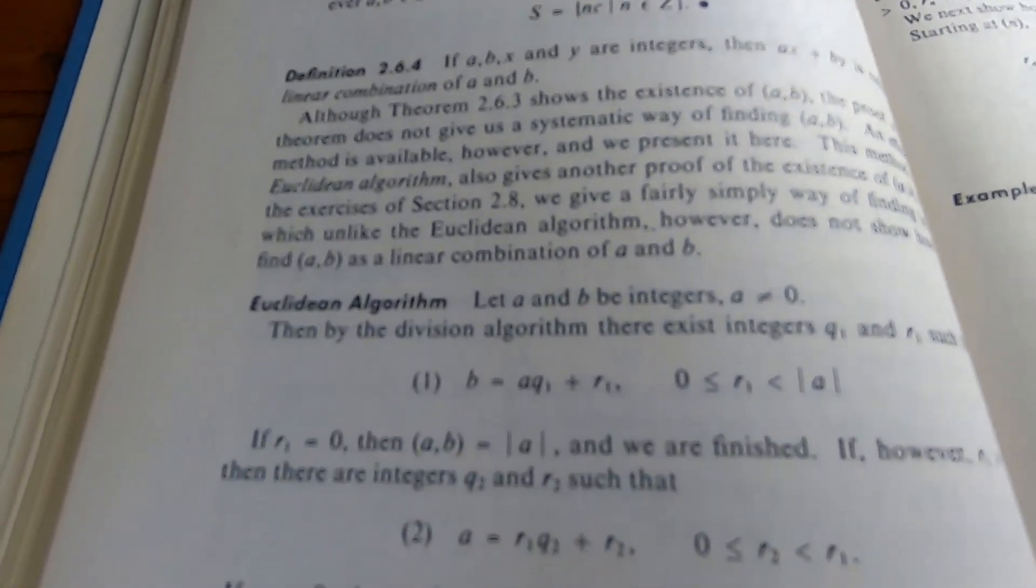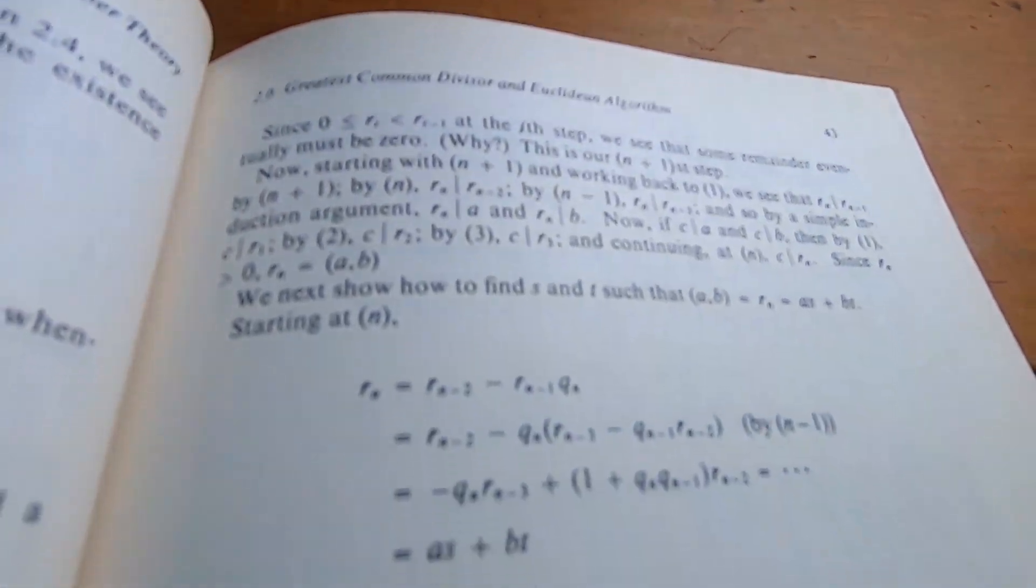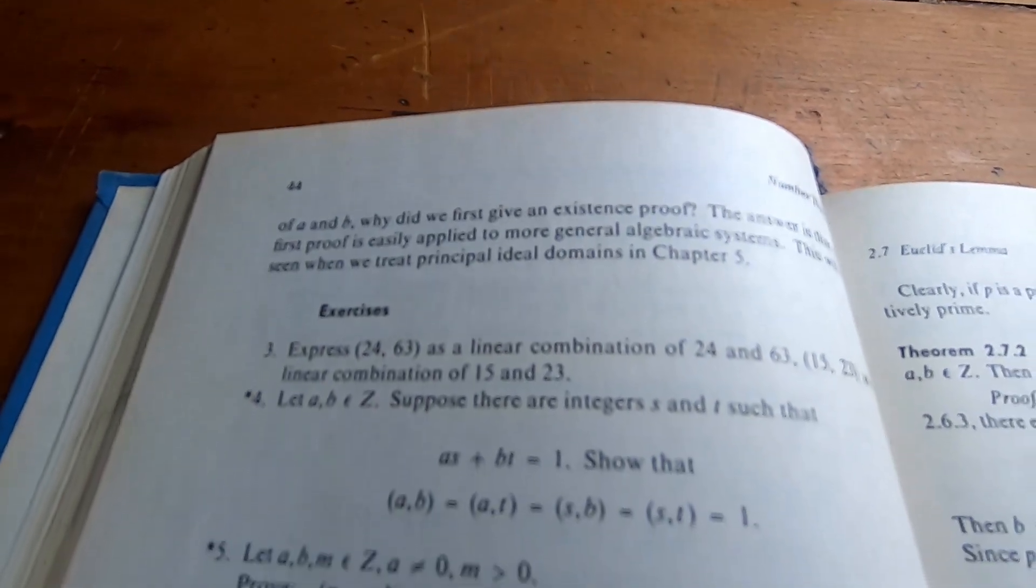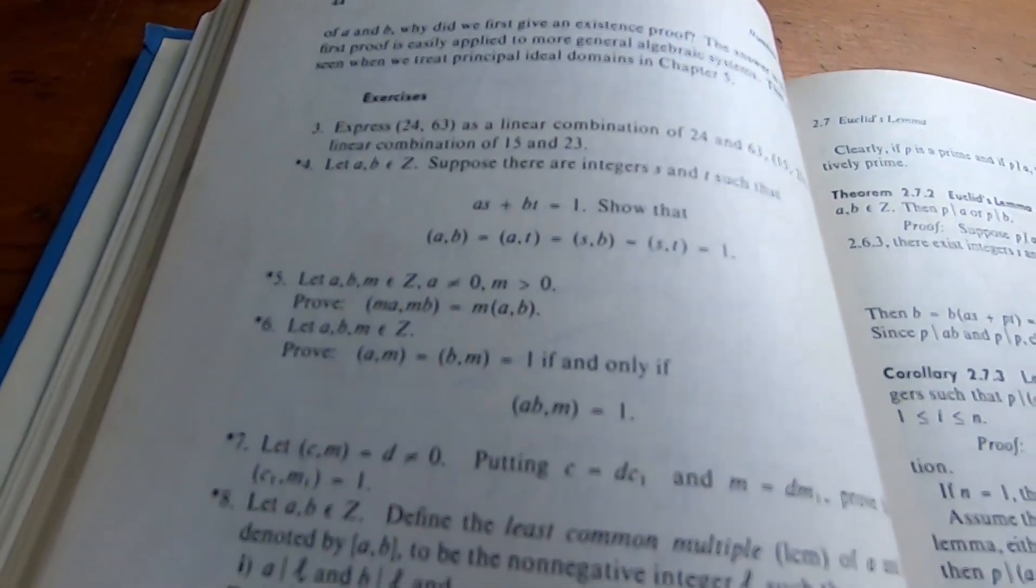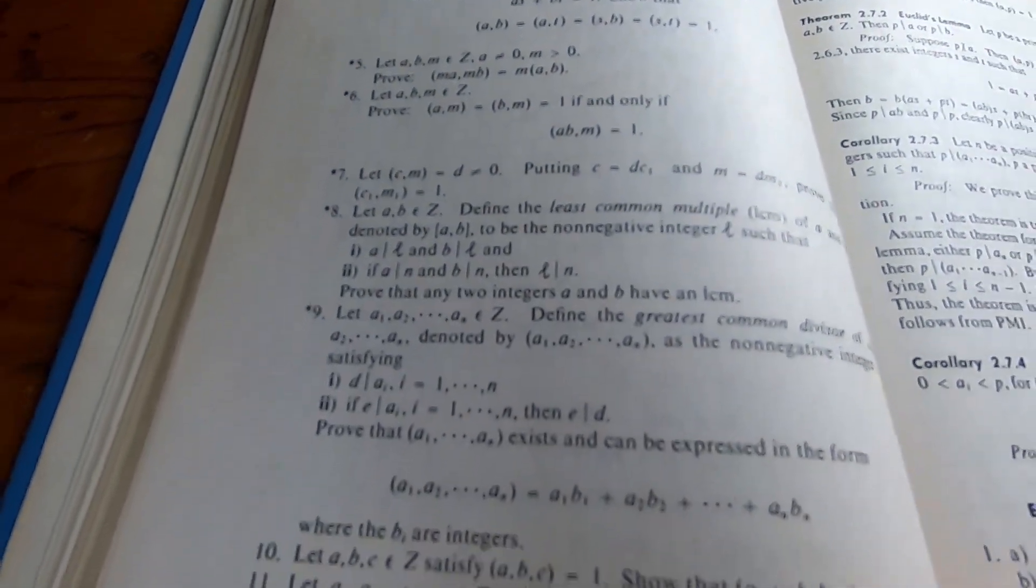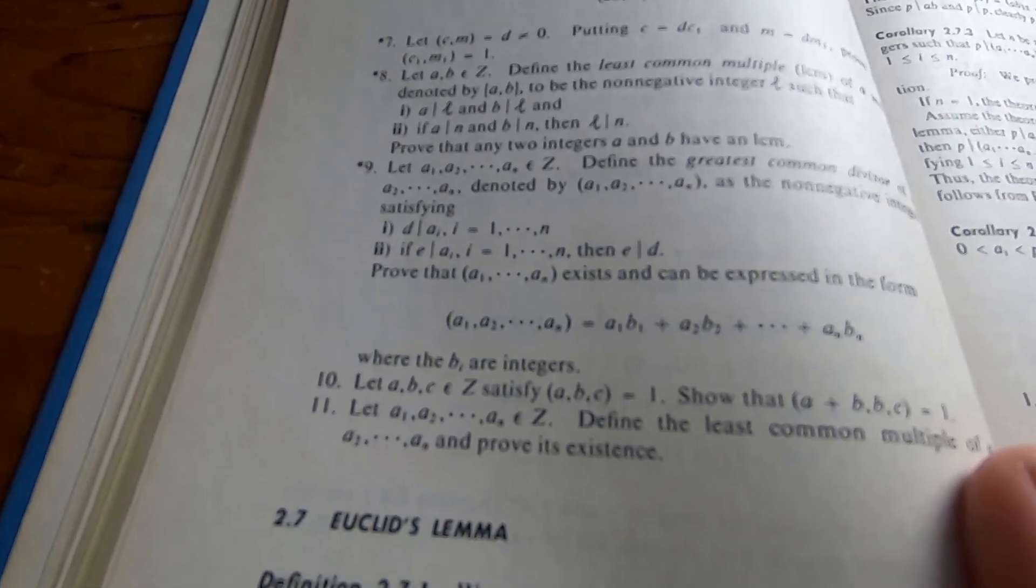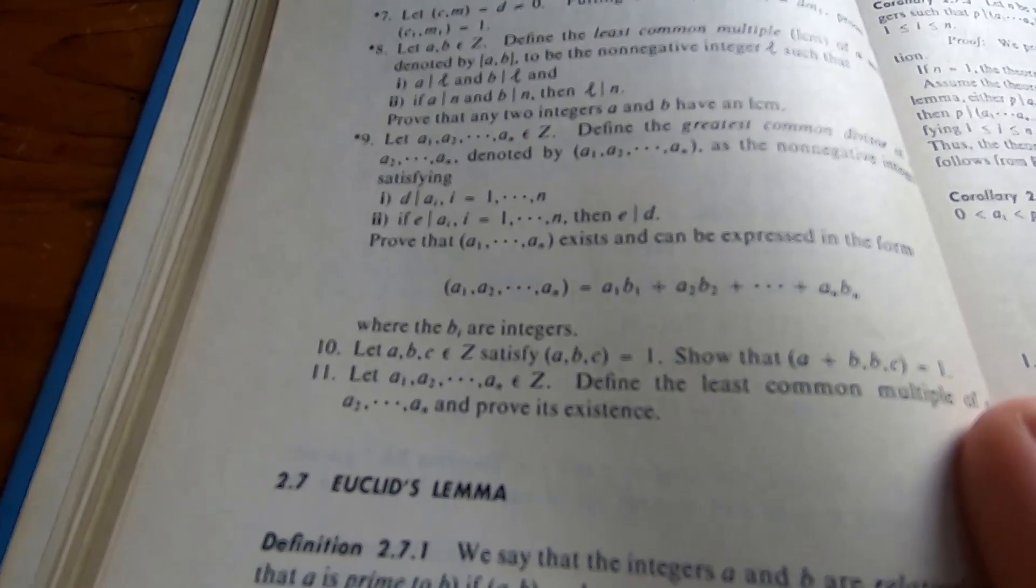And then the section continues. So there's still more here, and there's more over here. Still the same section, 2.6, and go ahead and turn the page. And then we have more exercises. So the exercises aren't necessarily at the end of the section. You see, now we start the next section. So you have sections, and they're broken up in random ways.